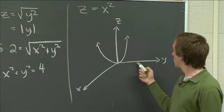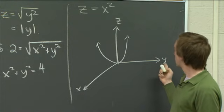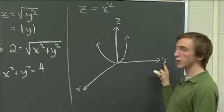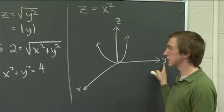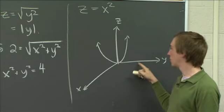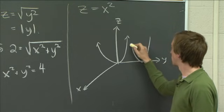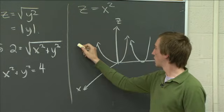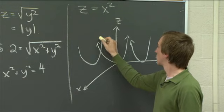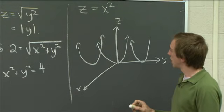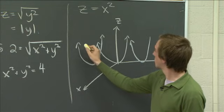But now, if you think about it, what it means to say that this function doesn't depend on y, what that means is that we have the exact same picture at every value of y. So if we go out here, then we're going to have the same picture. And if we go over here, we're going to have the same picture. And in fact, what you're going to get is you're going to get a prism.